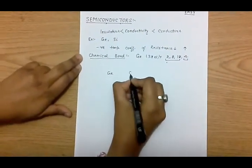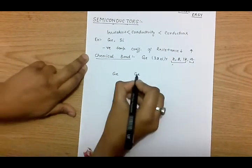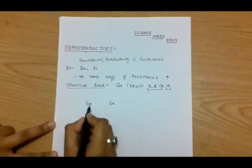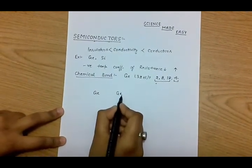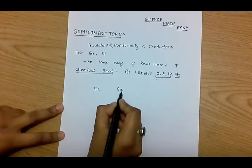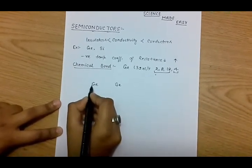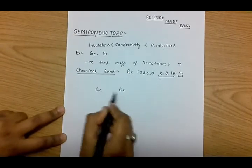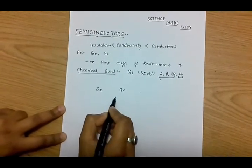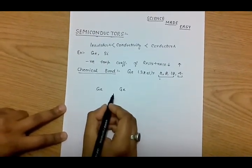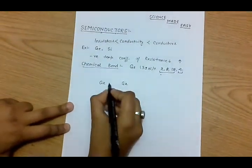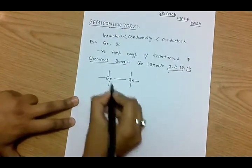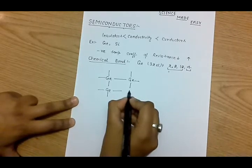When two germanium atoms are brought close to each other, the positive core of one atom attracts the valence electrons of the other atom. At the same time, there are also repulsive forces acting between the positive cores and the valence electrons of the two atoms. When an equilibrium condition is reached — that is, when attractive forces are balanced by repulsive forces — a covalent bond is formed. Each germanium atom can form four covalent bonds.